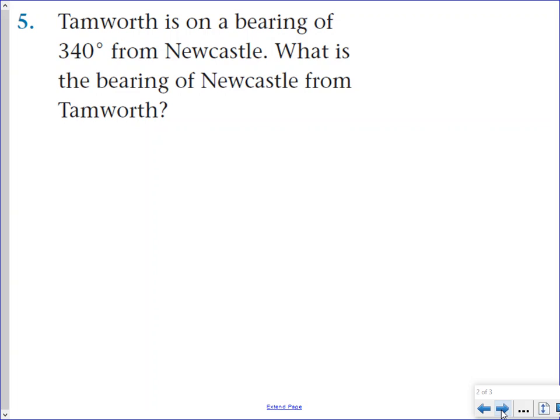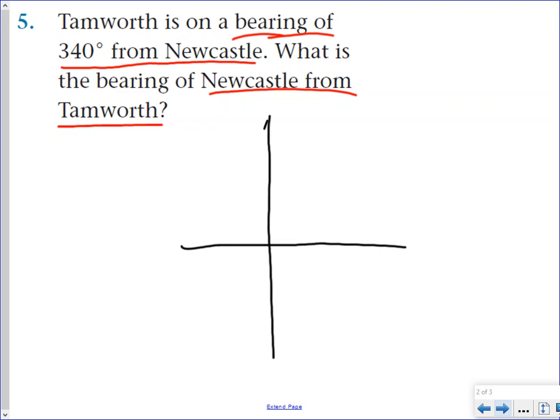Going into this next question, it's very similar. We have Tamworth is on a bearing of, so we'll write and identify the information. It's on a bearing of 340 degrees from Newcastle, or the bearing of Newcastle from Tamworth. So basically, it's the same kind of question. So, of course, that means we're going to start off the same way. Start off with a compass. I'm just going to do it a little bit bigger because it was a bit squished up in that last one. Remember, you want to make your diagrams fairly big because things are going to get squished up if you don't do that.